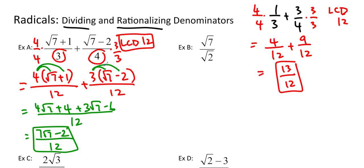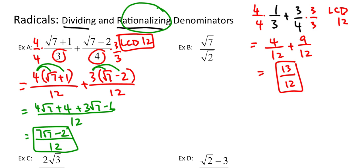So that's the first type — we're just adding fractions, regular fractions with integers in the bottom. Now we're going to talk about rationalizing denominators, because root 2 is not rational, it's irrational. So we want to make it into a rational number.